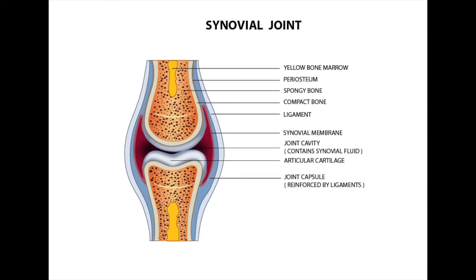The structure of a freely movable or synovial joint: at both bone ends you have articular cartilage, which is important for shock absorption and prevents bone ends from rubbing together, allowing smooth movement. Then you have the joint capsule, which encloses the joint cavity. Within the joint capsule is the synovial membrane, which secretes synovial fluid into the joint once activity begins. Synovial fluid lubricates the joints.